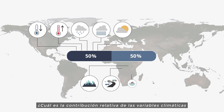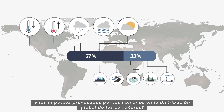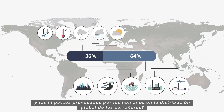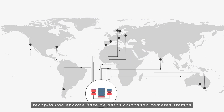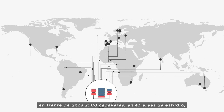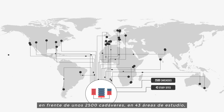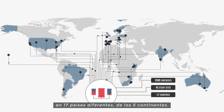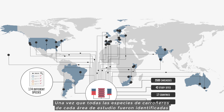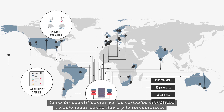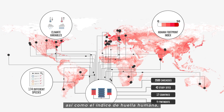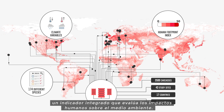What is the relative contribution of climatic variables and human impacts to scavengers' distribution worldwide? To answer this question, our large research team compiled a comprehensive dataset by setting up camera traps in front of some 2,500 carcasses in 43 study sites in 17 different countries across the five continents. Once all the scavenger species were identified for each study site, we also quantified several climatic variables related to rainfall and temperature, as well as the Human Footprint Index, an integrative measure of human impacts on the environment.